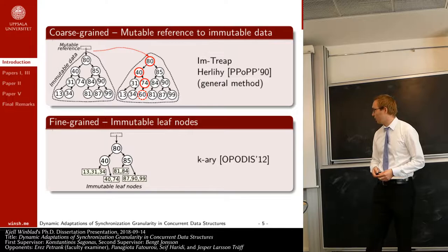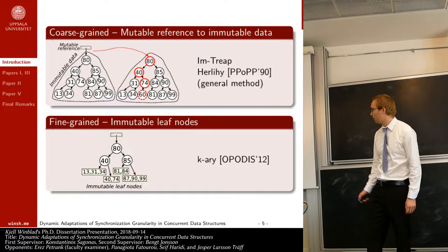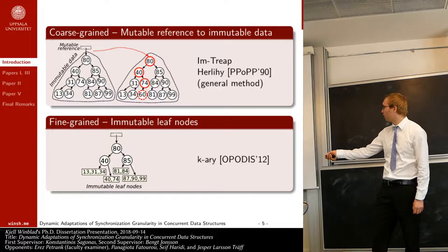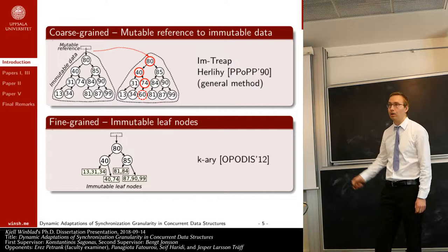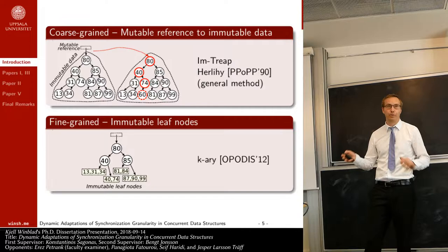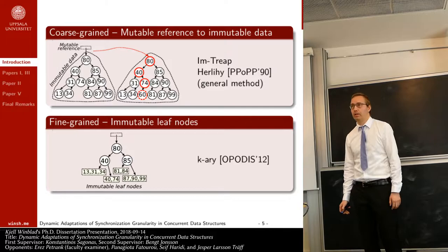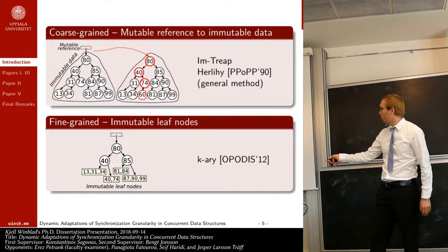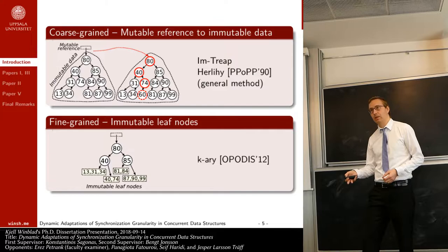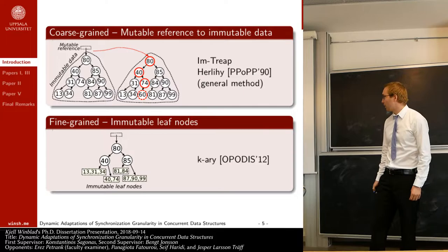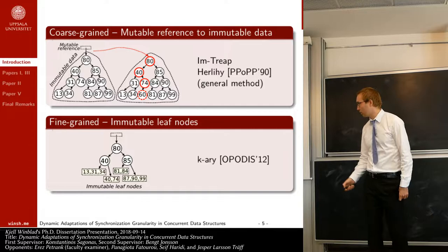Instead, one might want to use a concurrent data structure with fine-grained synchronization granularity. I use the lock-free k-ary search tree as an example. All items are stored in leaf nodes, and the internal nodes are mutable, allowing parallel threads to operate in different parts of the data structure simultaneously. But when you have range queries, they may need to traverse many leaf nodes, and while doing so they can conflict with update operations, which might make them retry some steps. This data structure is much better for updates, but not as good for range queries.